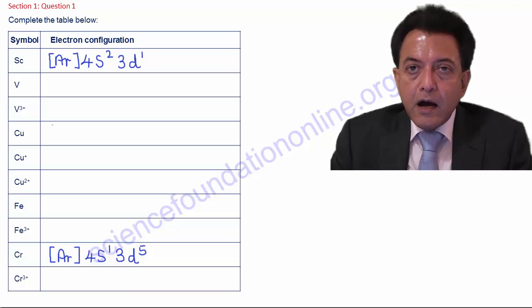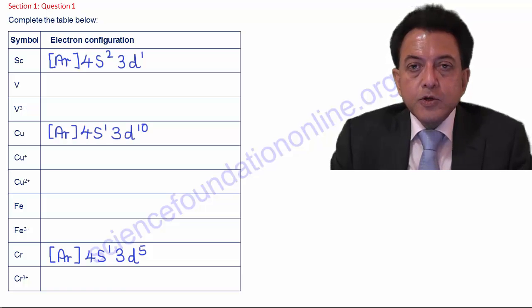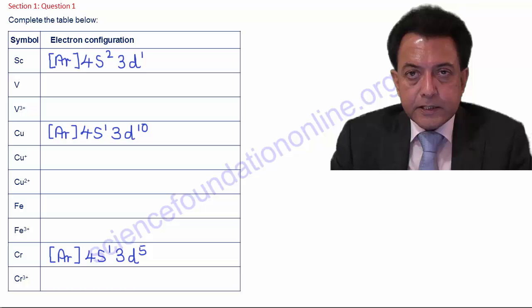You can now pause my explanation and try to complete the electron configurations of vanadium, chemical symbol V, and iron, chemical symbol Fe, before resuming to compare your answers with my explanation.